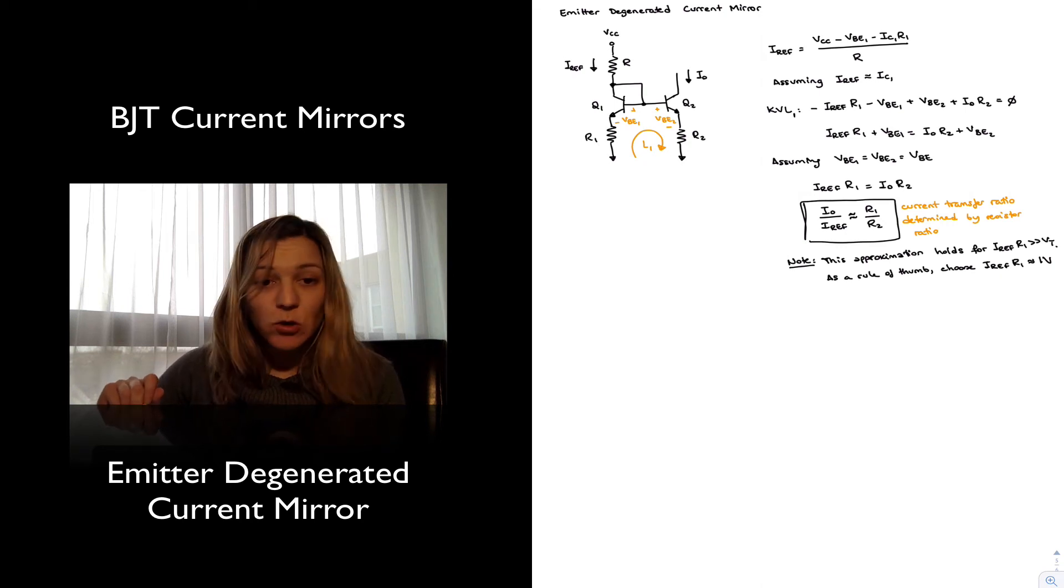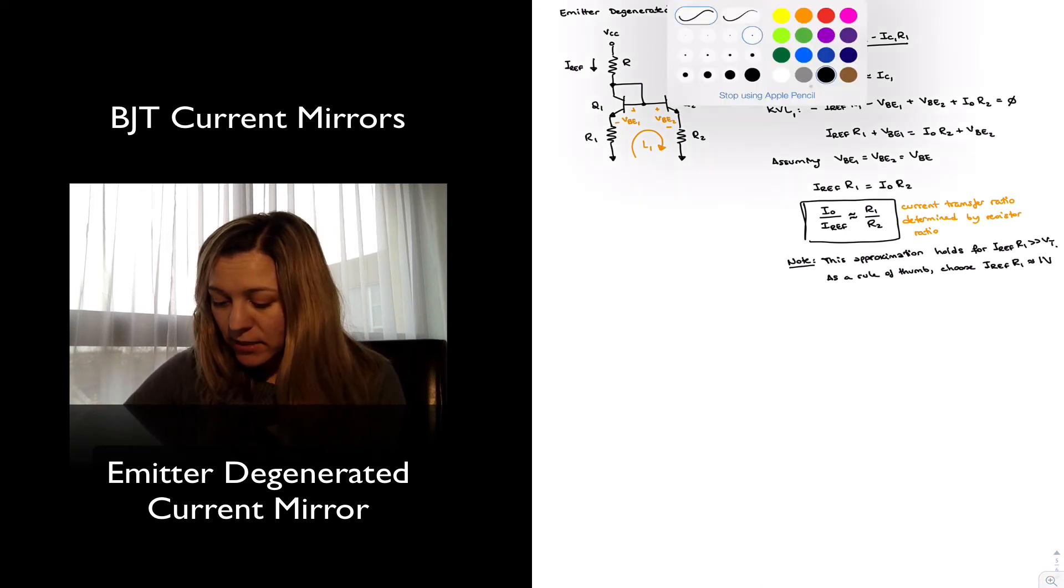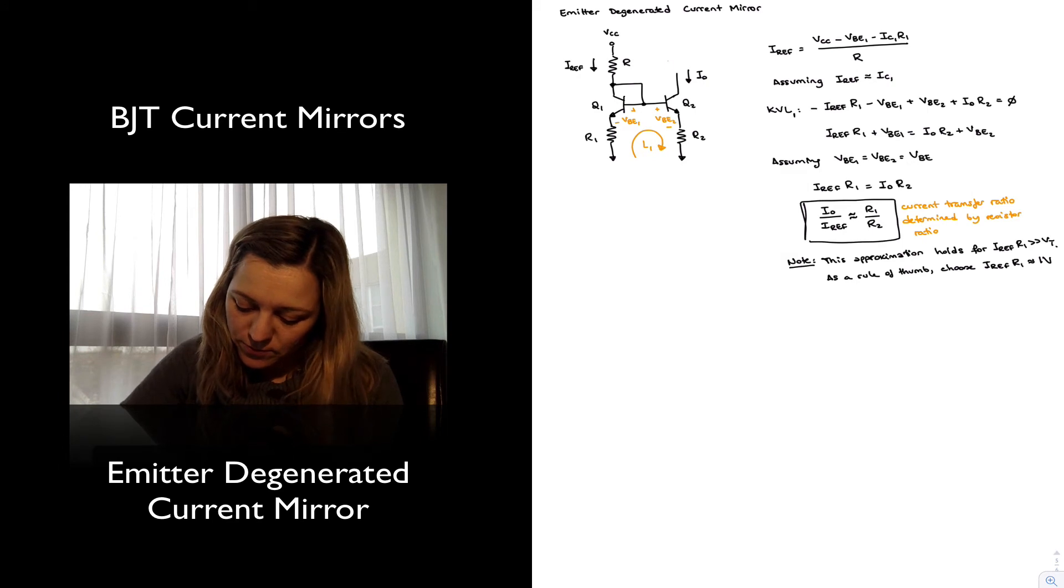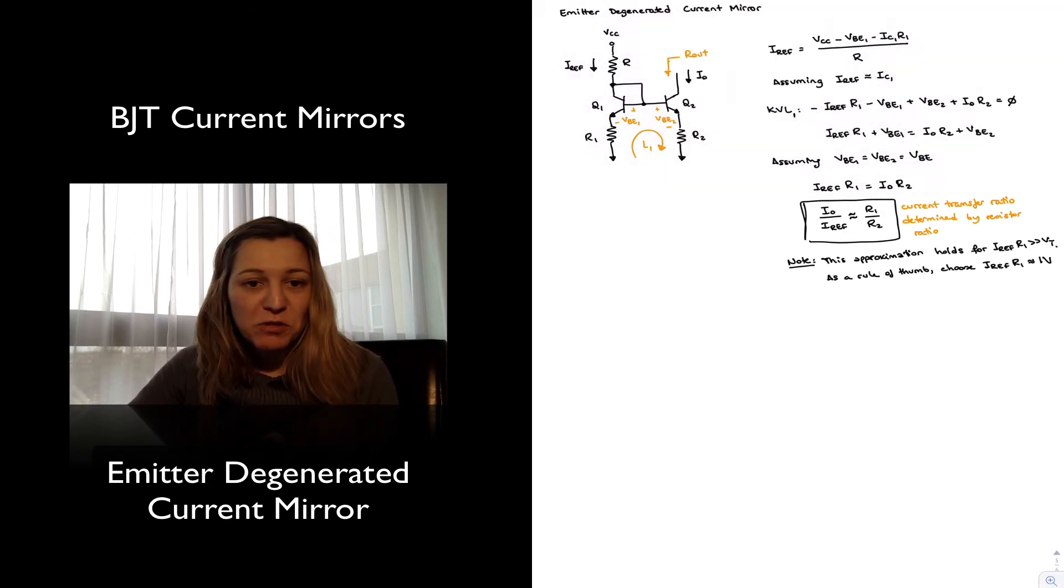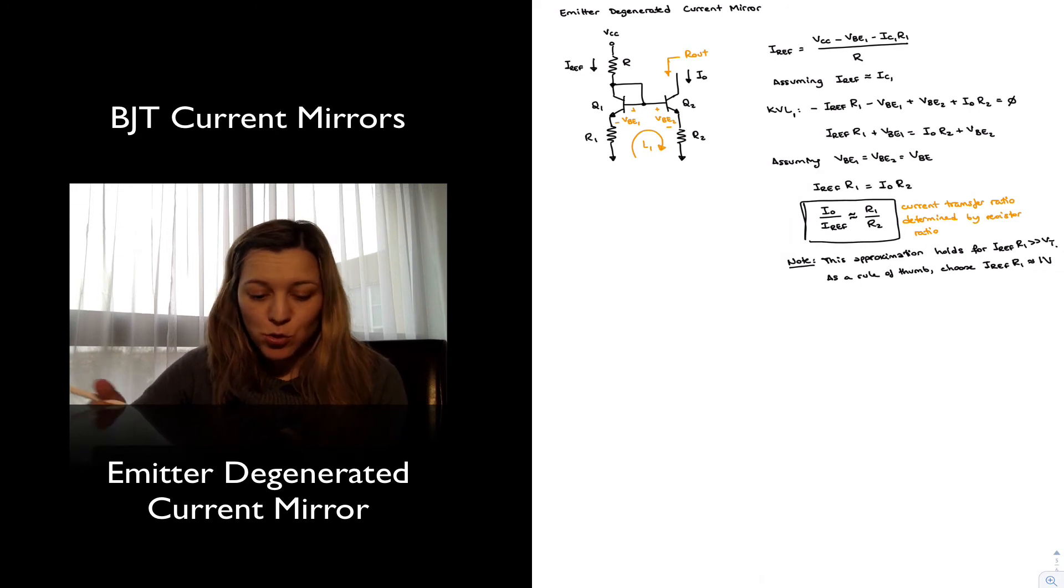The next thing, we're going to take a look at the output resistance for the circuit. And you may just be tempted to think that the output resistance is equal to little r_o, but actually, if you go through the small signal analysis, you will see that the introduction of the degeneration resistors has introduced negative feedback in the circuit, which increases the output resistance of this current source.